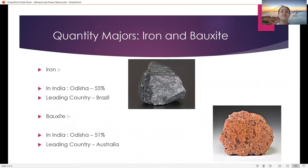Quantity measures for iron and bauxite. For iron in India, it's 55% in Odisha and the leading country is Brazil. For bauxite in India, it's 51% in Odisha and the leading country is Australia.